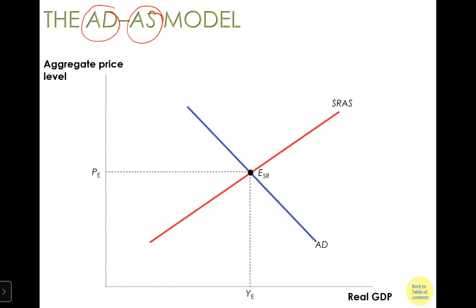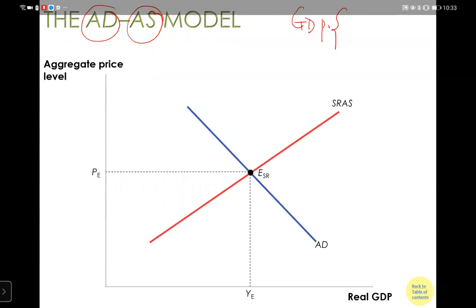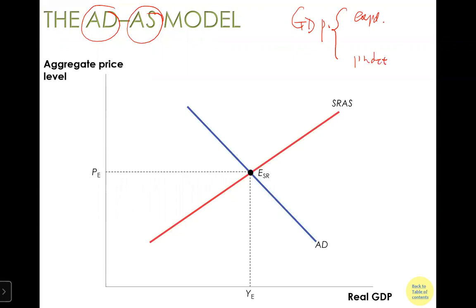So we are in the chapter trying to understand the determination of GDP. There are three ways to look at GDP: one is through expenditure, the other is through product. Expenditure essentially comes from the demand side, and product looks at GDP through the supply side. Income connects expenditure and product.